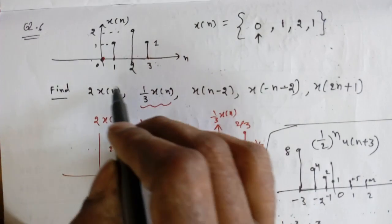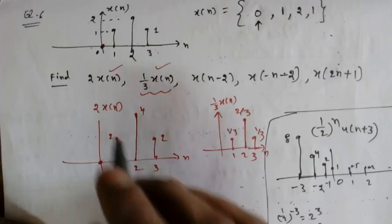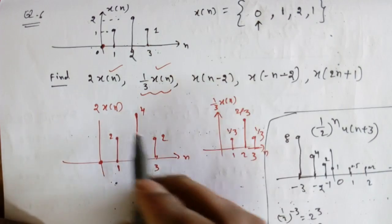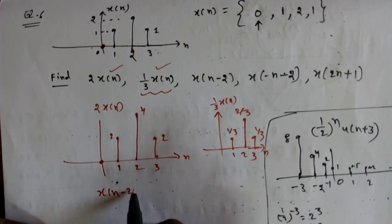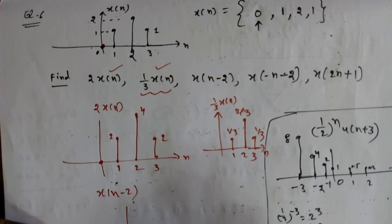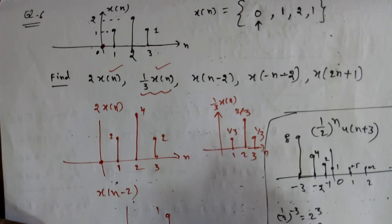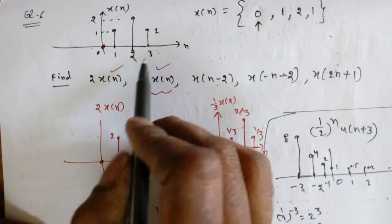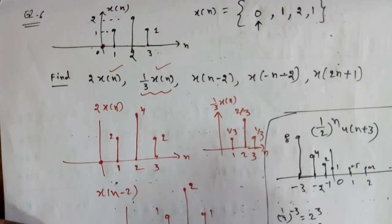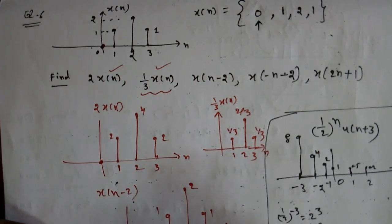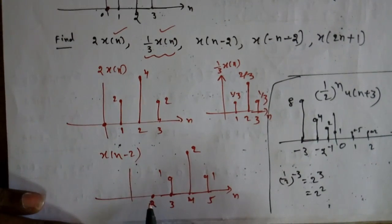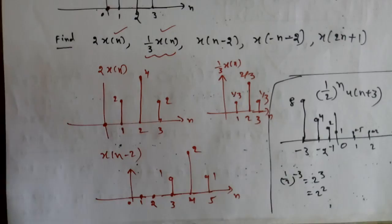Next is x[n-2], the delayed version, delayed by 2. At n = 2 we get 0, at n = 3 we get 1, at n = 4 we get 2, and at n = 5 we get 1. So each original index has 2 added to it: 1+2=3, 2+2=4, 3+2=5. This is x[n-2].